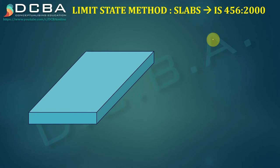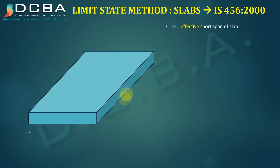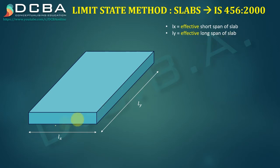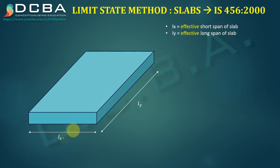Today we will be starting with a new topic: limit state method for slabs — how we design slabs using limit state method and IS456:2000. Consider a slab where LX is the effective short span and LY is the effective long span. Generally, a slab that is not square will have one long span and one short span, and what we are interested in are the effective short span and effective long span — LX and LY.